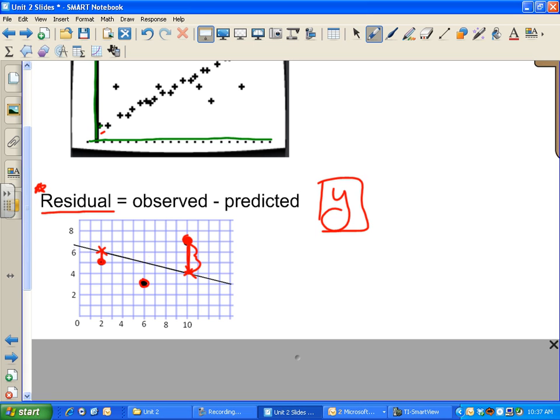Kind of same thing over here. I observed this, but according to my line, I should have been here. So that little distance between is the residual. Again, here's an observation, but according to my line, I should have been up here. So that distance is the residual. Well, some really awesome people using calculus, thank you calculus, gave us a lot of our stats. They were able to create a way that we could minimize these residuals.